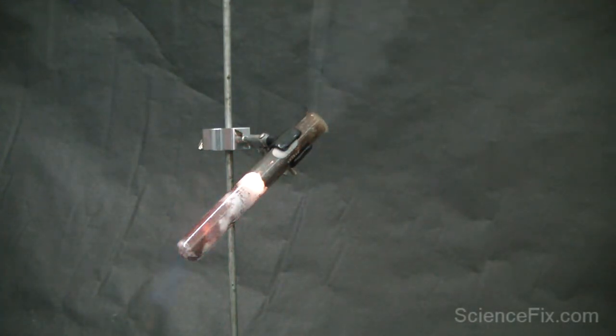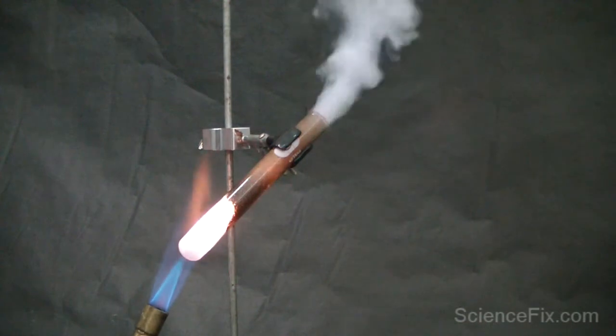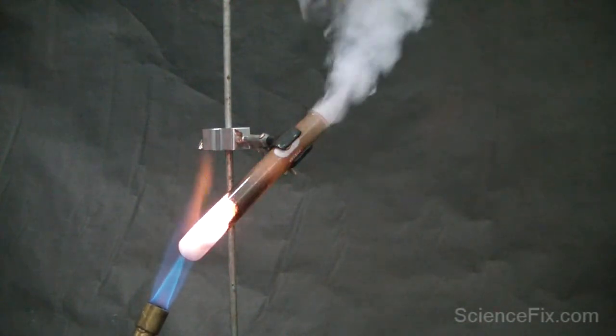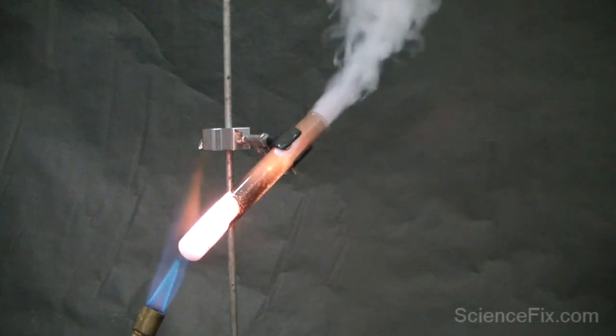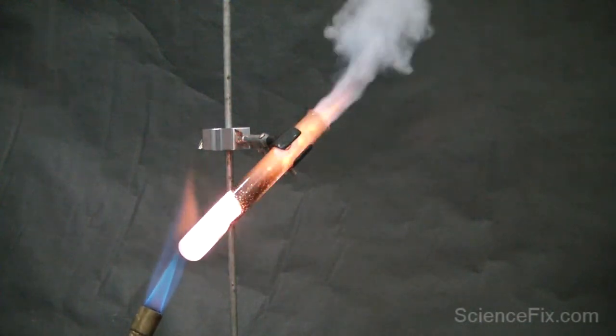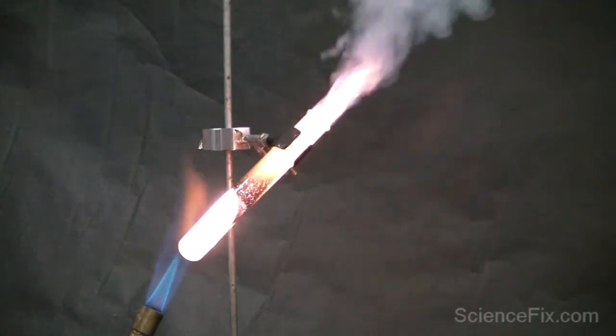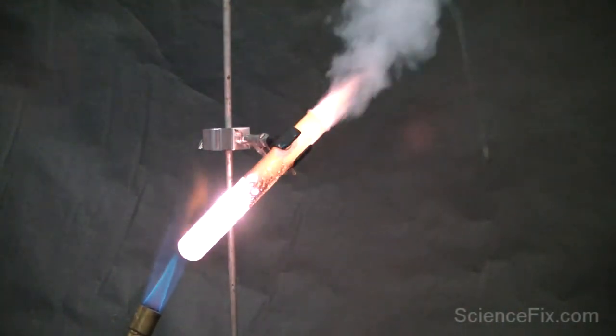The gummy worm contains sucrose, and sucrose has a lot of energy in its bonds. The sucrose reacts with the potassium chlorate. What the potassium chlorate does is release a whole bunch of oxygen to react with that sucrose.